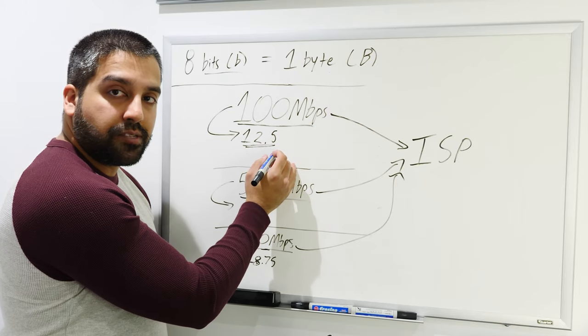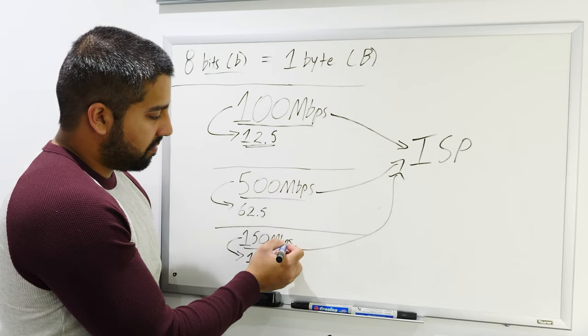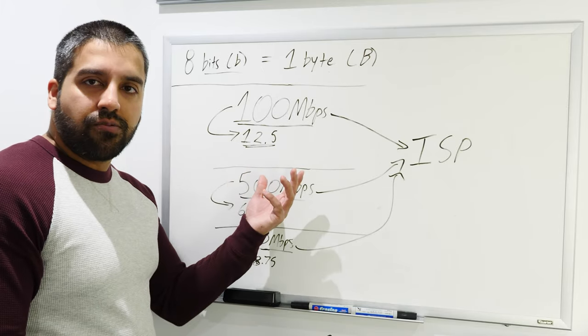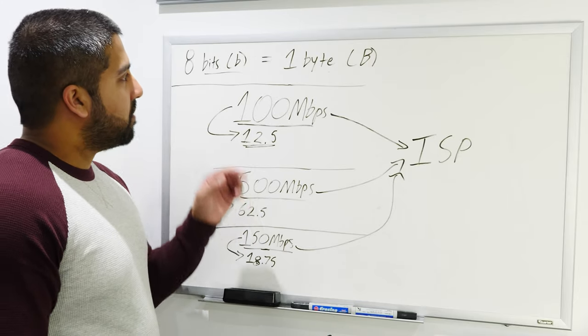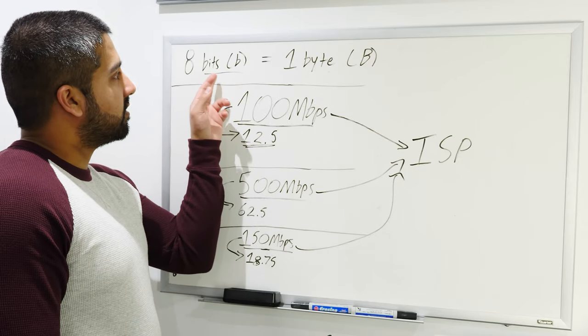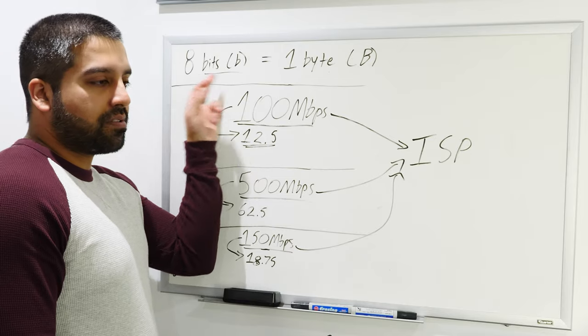But for anyone else wondering, hey, why do ISPs advertise this speed and not this speed? You know, why do they advertise megabits per second and not megabytes per second? Same with this, same with this. Is that false advertising? Is that fair to the consumers? Is that misleading?